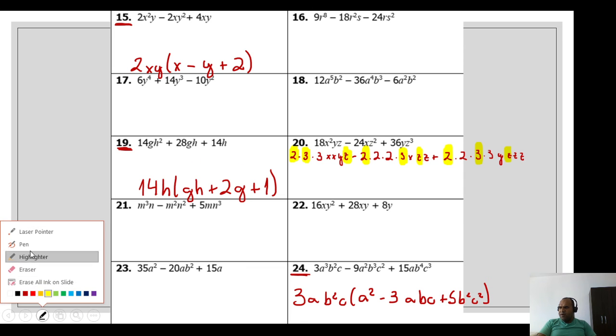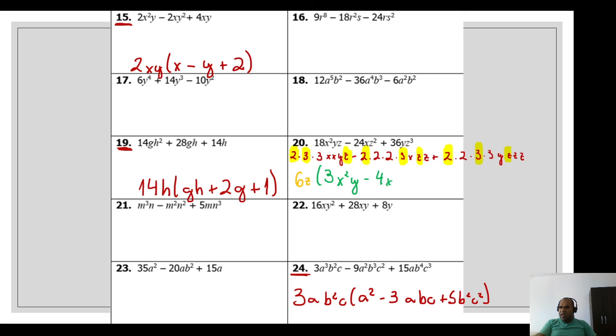Let's write now, first of all, let's write our common factor GCF: 2 times 3 is 6, 6z. Just it, I cannot have any other number. And what I write inside the parentheses? Open parentheses, what is left? It is 3x squared y, the first one: x squared y. Minus 2 times 2, 4: 4xz, 4xz. And the last one, plus here, 2 times 3 is 6: 6 and yz squared, yz squared. We finish here the first one.